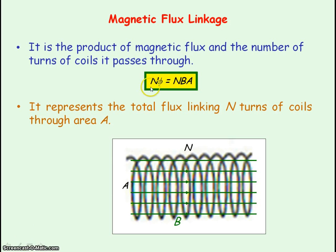To get the units of magnetic flux linkage, we use N phi. N, the number of turns, has no units, and phi, the magnetic flux, has the units of Weber. So the units of magnetic flux linkage is the Weber.